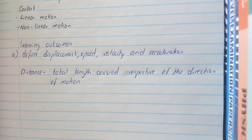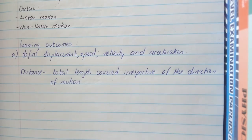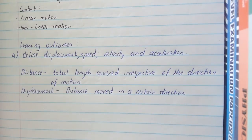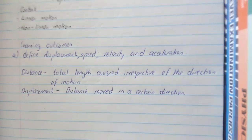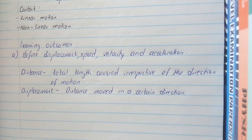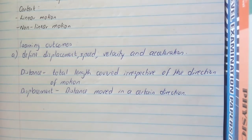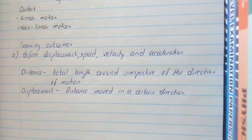Distance is defined as the total length covered irrespective of the direction of motion — the actual path taken by the object. Displacement is defined as the distance moved in a certain direction. Because it includes direction, it is a vector. Distance does not include direction — it takes the whole path the object has taken — and that's why it is a scalar.